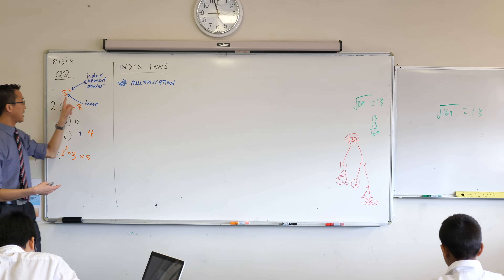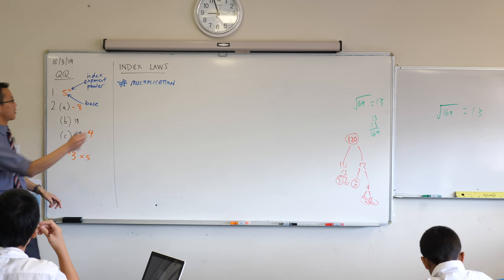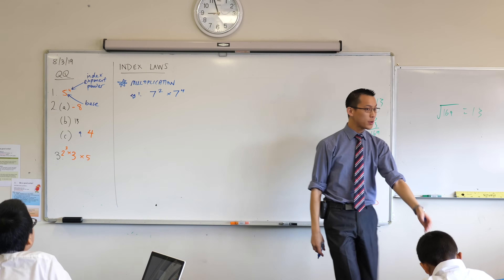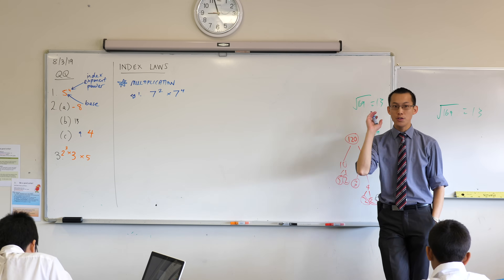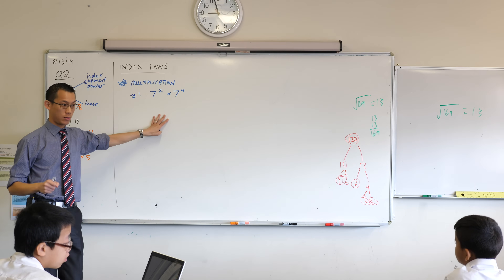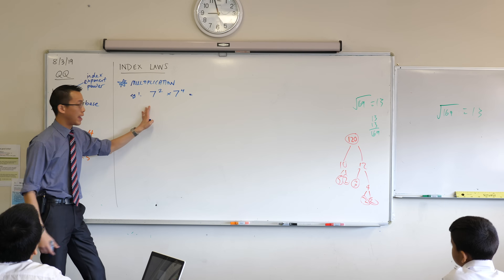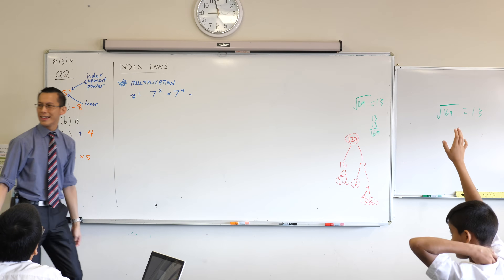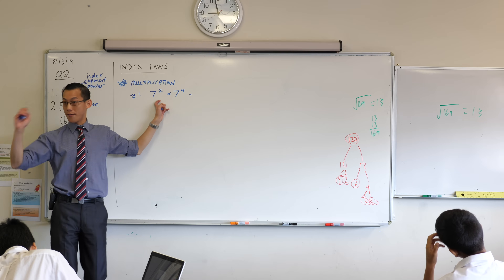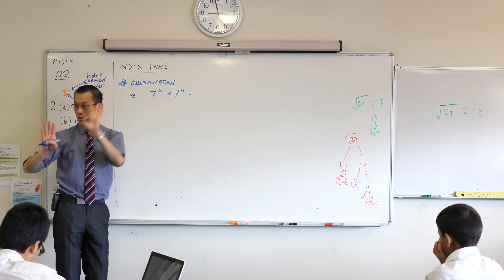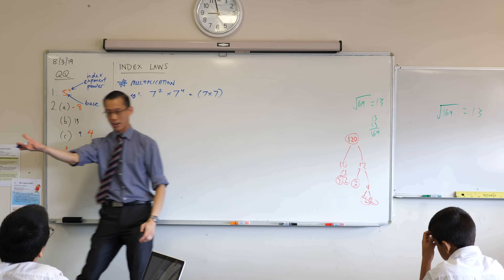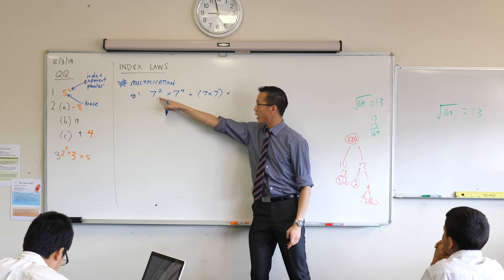The first subheading I want you to put underneath 'index laws' is multiplication. So let's think about this: if I were to multiply seven squared and seven to the power of four, some of you might immediately be able to tell me the answer, which is great, but I want to know not just what the answer is but why the answer is what it is. To do that, let's unpack — what does seven squared mean as an expansion? Seven times seven, right? And if you actually calculate that, it'd be 49.